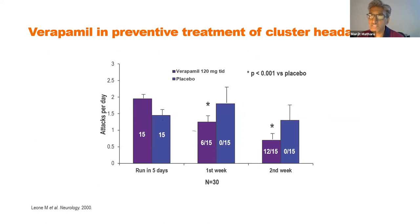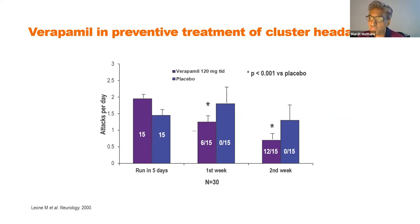For preventive treatment, verapamil is the only orally available treatment with randomized controlled data. Leone's study in 15 patients per arm showed 80% of patients achieved at least a 50% reduction in cluster attacks at week two with verapamil at 360 mg daily, while none of the placebo patients responded. There is very clear evidence that verapamil is effective, and it is one of the most effective agents available in clinical practice.